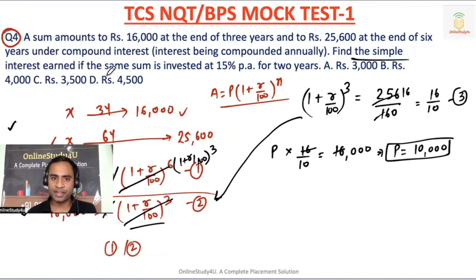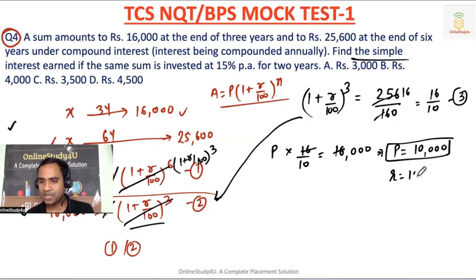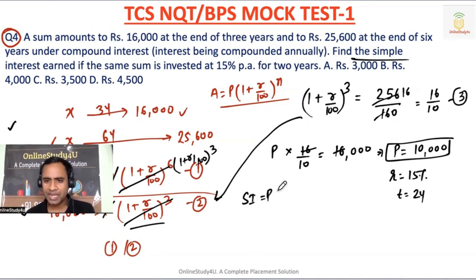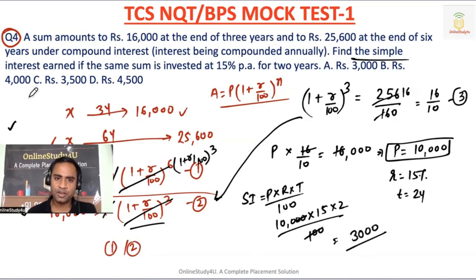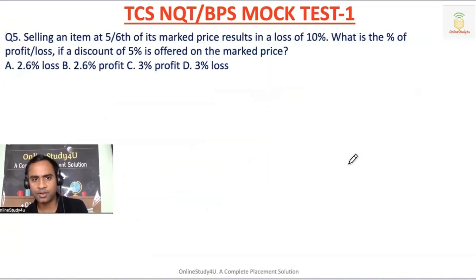Now find the simple interest earned if the same sum is invested at 15% rate for 2 years. Simple interest formula is PRT/100. So 10,000 × 15 × 2 / 100 = 3,000 rupees. Option A — 3,000 rupees — is the correct answer for question number four.